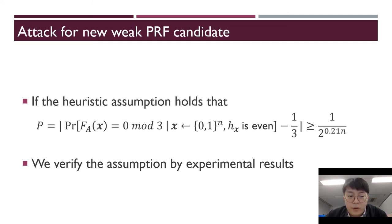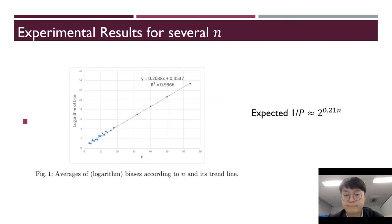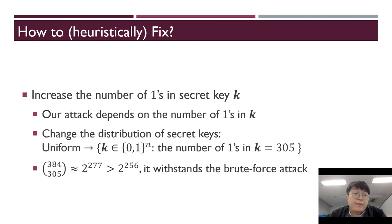We verify the assumption by experimental results. We draw a trendline according to various n. The y-axis is the logarithm of a value p inverse. The logarithm trendline is almost the same as our expectation for several n. So our assumption is valid.